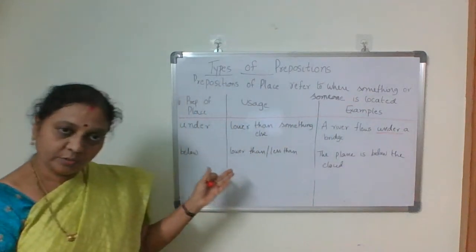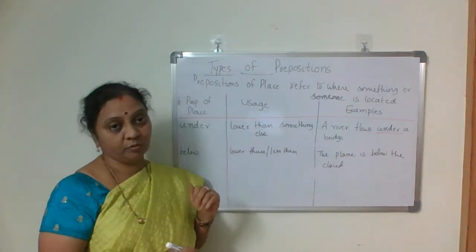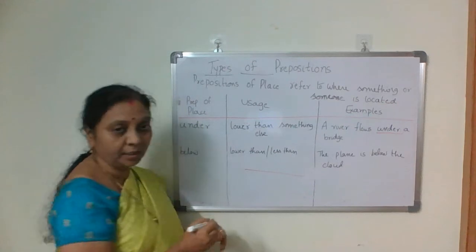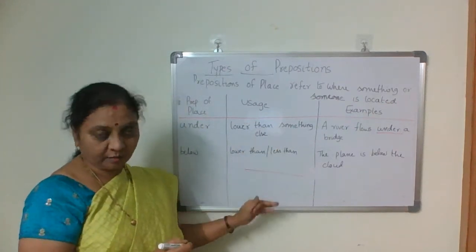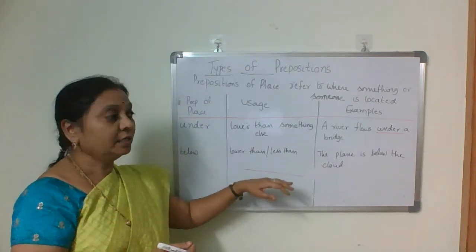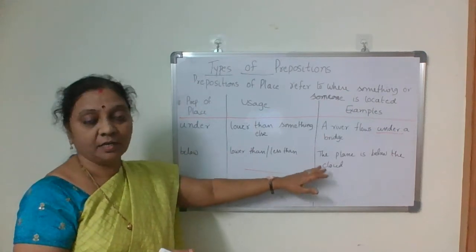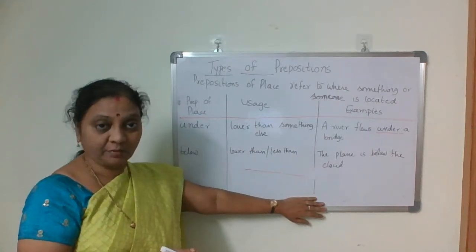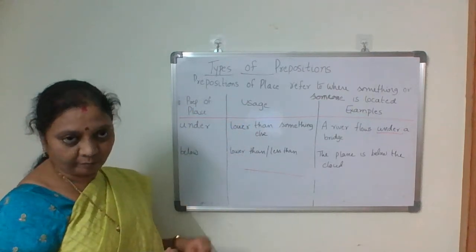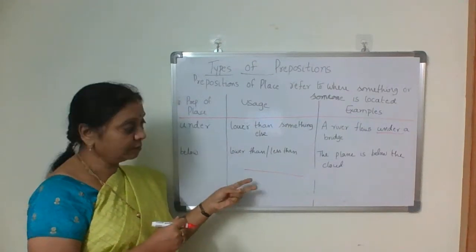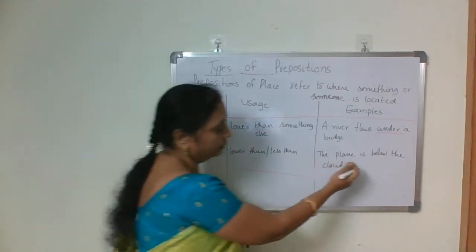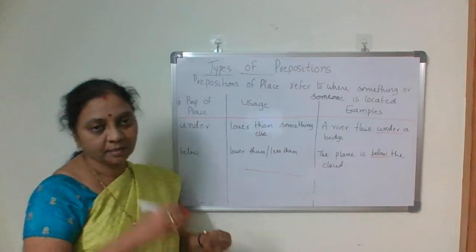'Below' is also lower than, but it also means 'less than'. For example, if you take a poverty line — a horizontal line — we say 'above poverty line' and 'below poverty line'. Regarding performance: 'His performance is above average' or 'His performance is below average.' We don't use 'over' and 'under' in these cases — we use 'above' and 'below'. For example: 'The plane is below the cloud.'